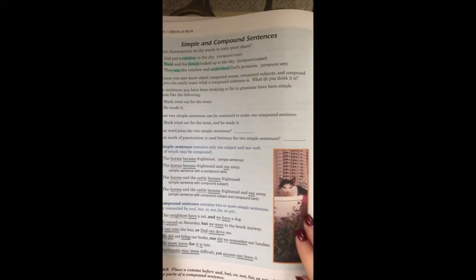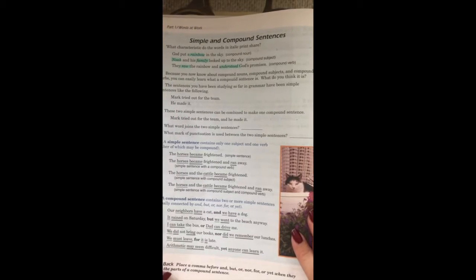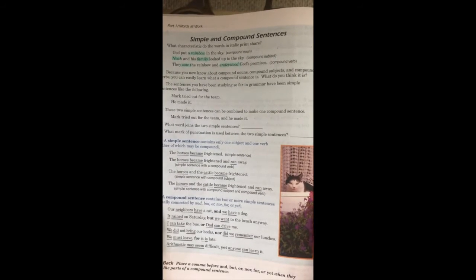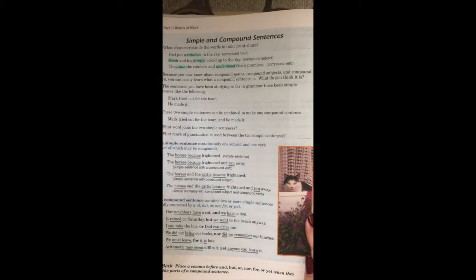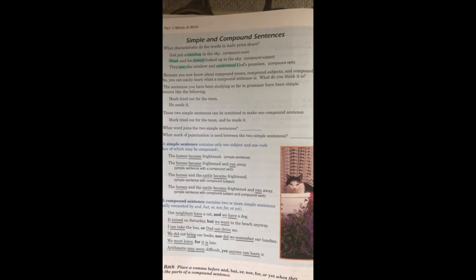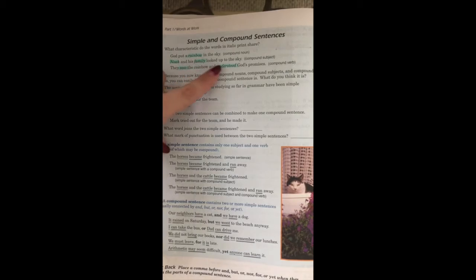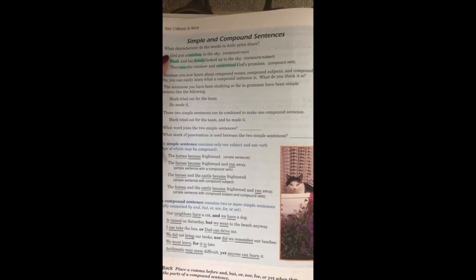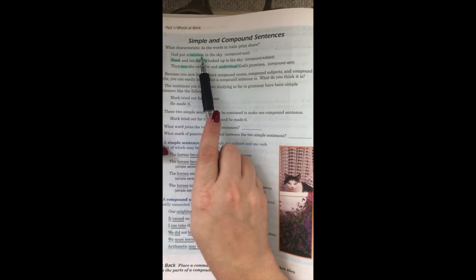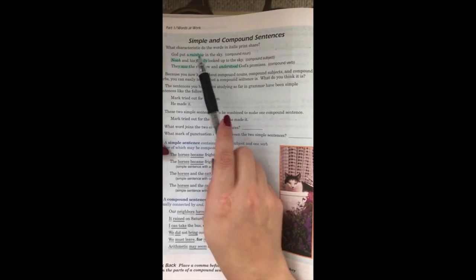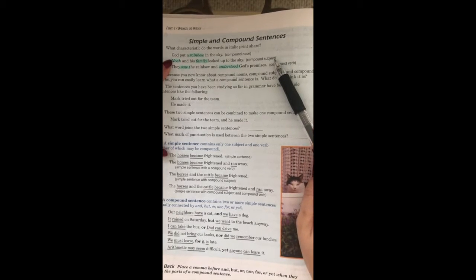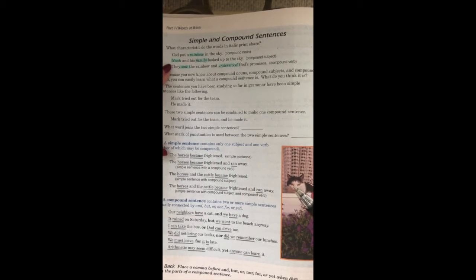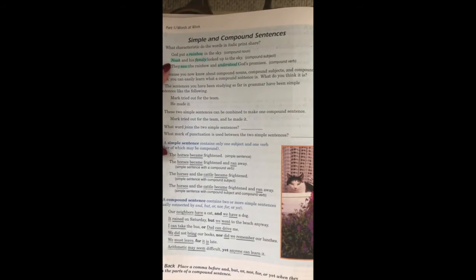Now we have our language arts assignment for Monday, and we're going to be working on simple and compound sentences. This should be pretty familiar as we've been working with compound subjects and compound nouns and compound verbs. It says to identify the characteristics of the words in italic. Italic means the slanted words which I have highlighted here. God put a rainbow in the sky. Rainbow is a compound noun because it's a compound word that is a noun. Noah and his family looked up to the sky. This is a compound subject, which means more than one subject in the sentence. They saw the rainbow and understood God's promises, so we have a compound verb, more than one verb.